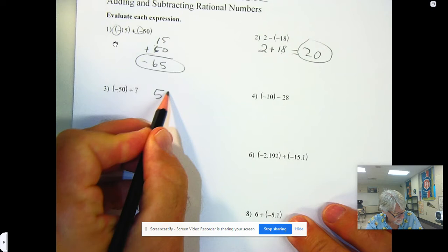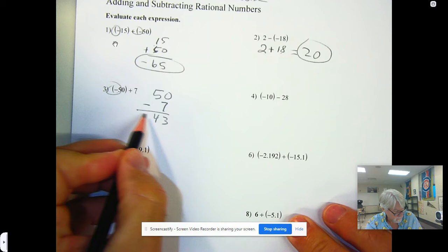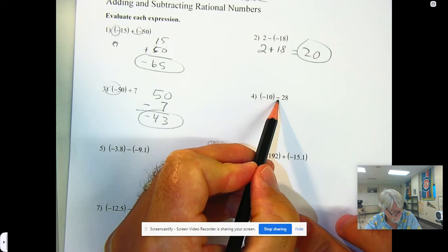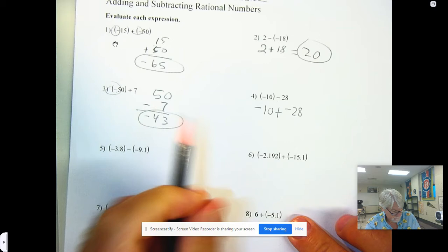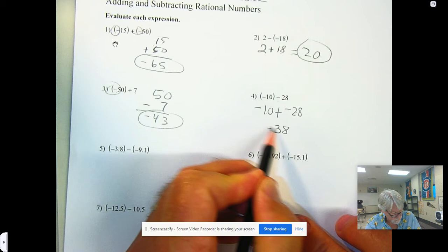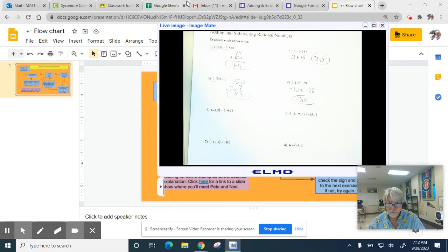Again, when you're adding two numbers with different signs, you have to find the difference in their absolute values and then use the sign of the number farthest from zero. Subtracting changes to adding the opposite. Adding two numbers with the same sign, add them and use that sign.